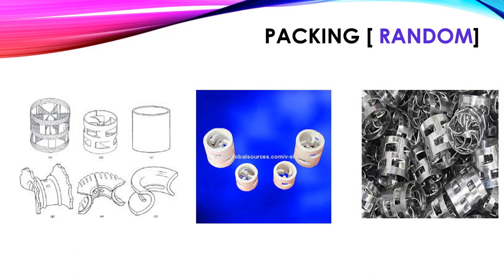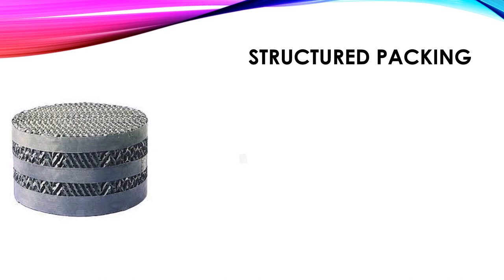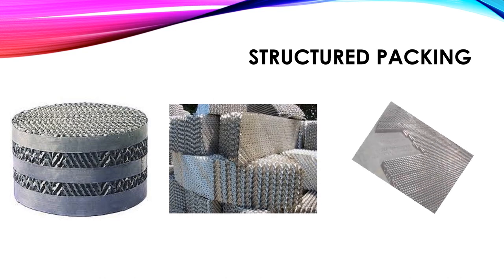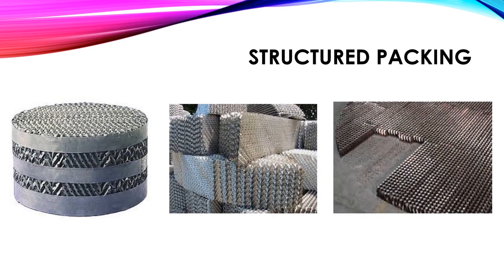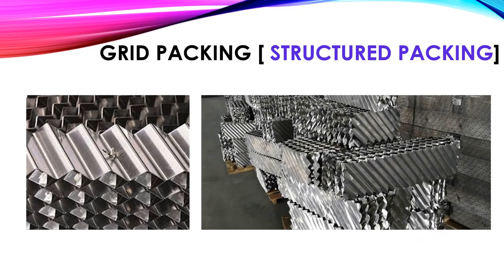These are different types of random packings. These are structured packings made with SS, stainless steel. This is another type of structured packing, much stronger than the previous picture — it is grid packing.